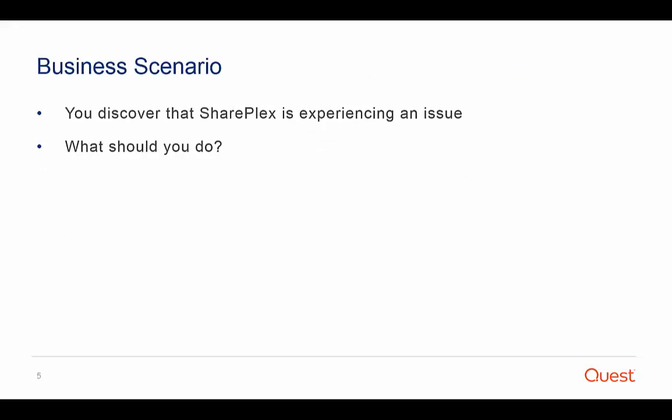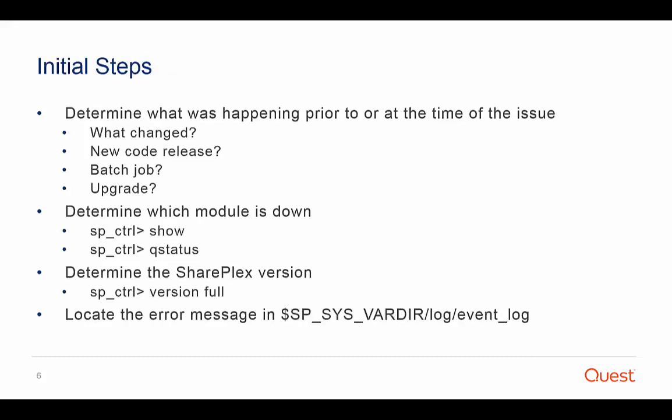Let's take a closer look at troubleshooting. Let's say you discover that SharePlex replication is not working. First, talk with your source users or DBAs and find out what has been happening on the server prior to the issue. Was anything changed? Was a patch applied? Was Oracle upgraded? Was there some code release or a large batch job? Then, determine which SharePlex process and queue are experiencing the issue.